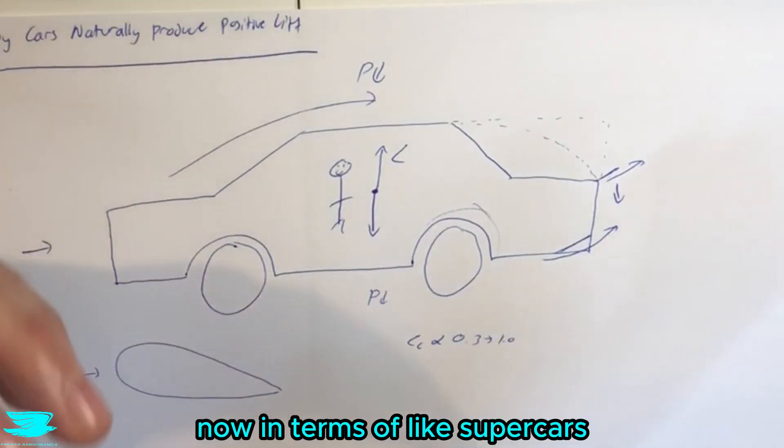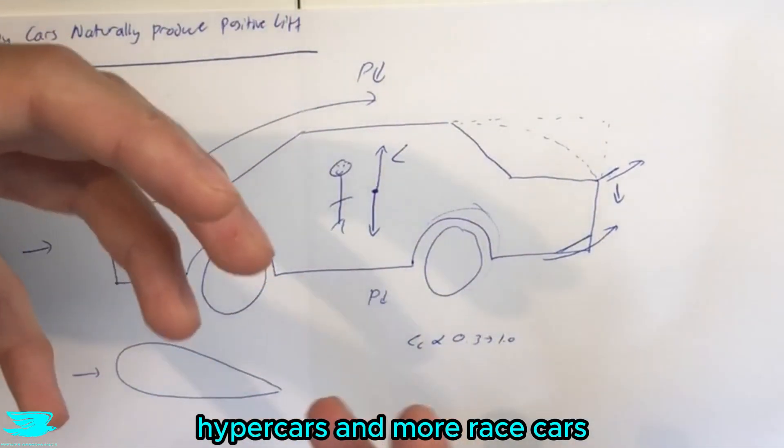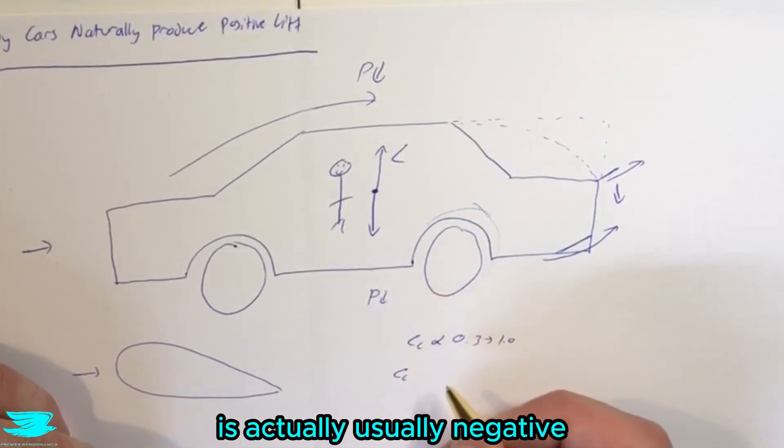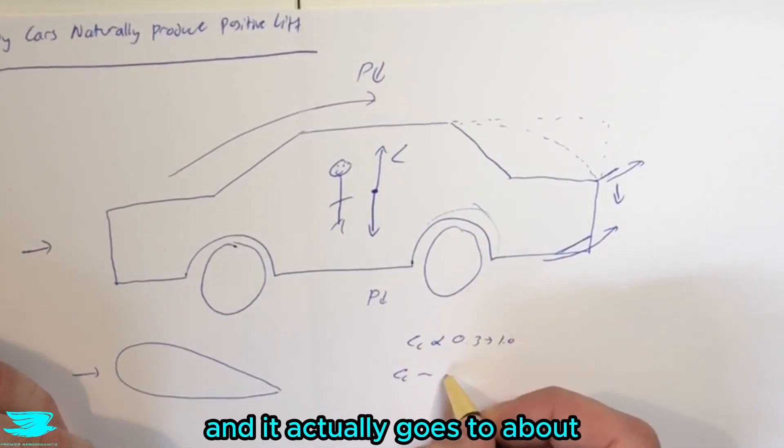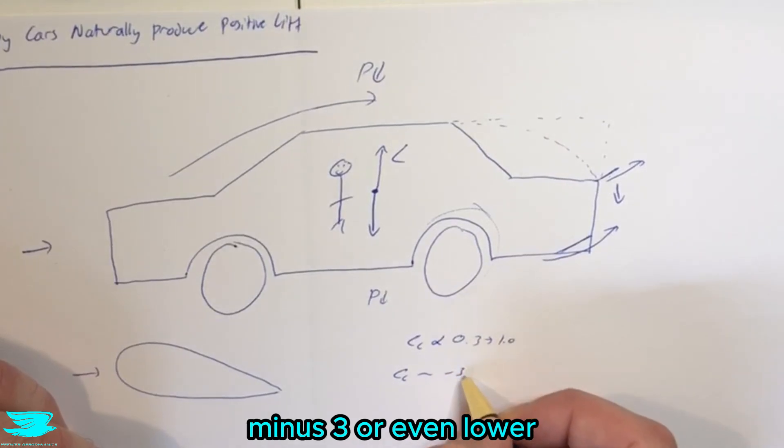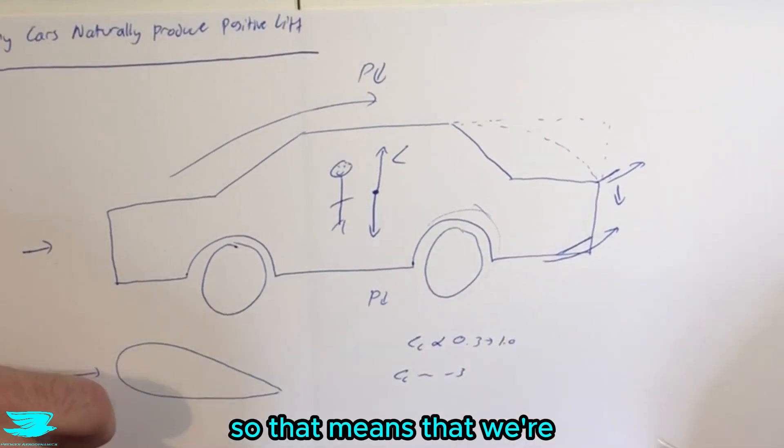Now in terms of supercars, hypercars, and race cars, the lift coefficient is actually usually negative. And it actually goes to about, in some cases, down to minus three or even lower. So that means that we're getting a lot of downforce,